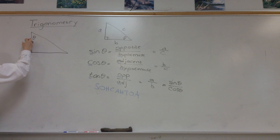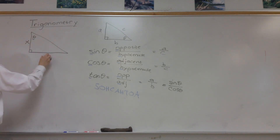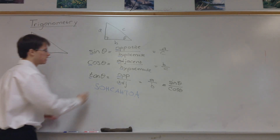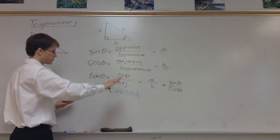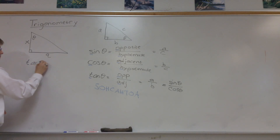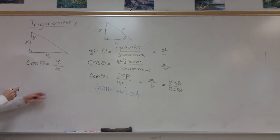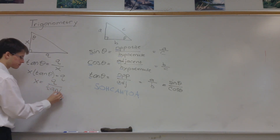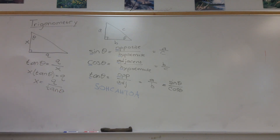Now let's switch the triangle around. Suppose the opposite side is q and the adjacent side is the unknown x. We want to find x given q. We need opposite and adjacent, which means tangent. So tangent of theta equals opposite over adjacent, which is q over x. Multiplying both sides by x gives x times tangent theta equals q. Dividing both sides by tangent theta, we get x equals q divided by tangent of theta.